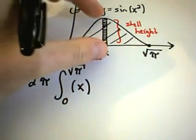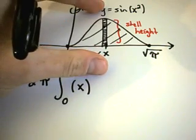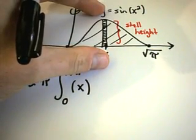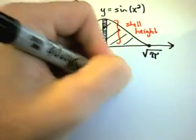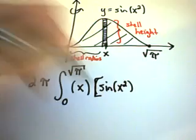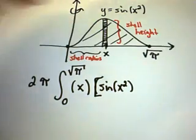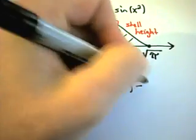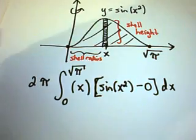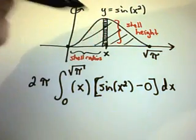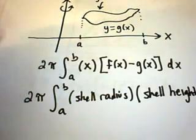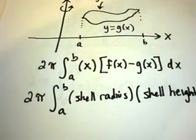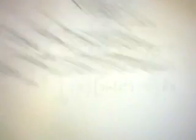The height of the rectangle is the shell height. In this case, the shell height is basically like finding the area enclosed by the curve: you take the top curve, which is sin(x²), and subtract the bottom curve, which is just y = 0. You wouldn't have to write the minus 0 in practice — this just illustrates the notion of shell radius and top function minus bottom function from the generic formula.